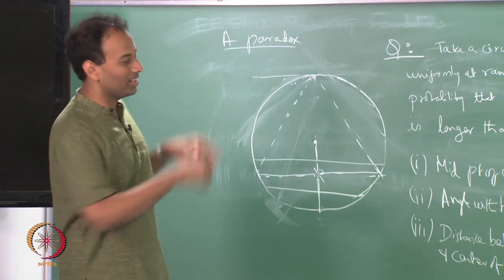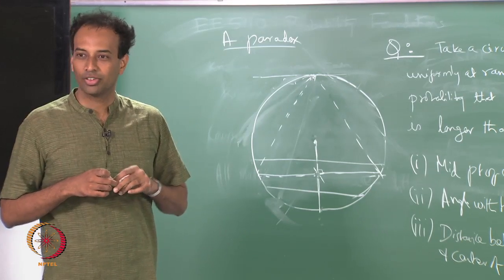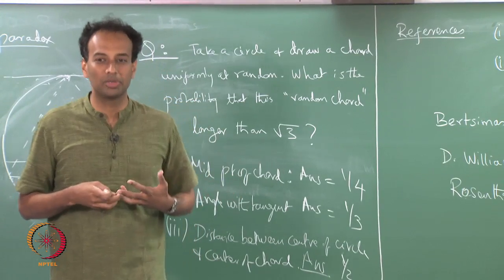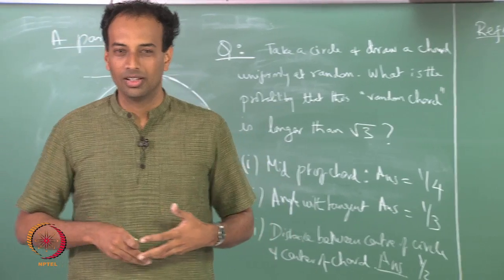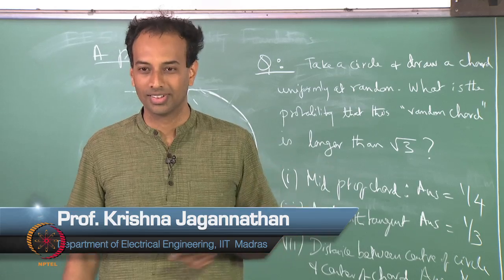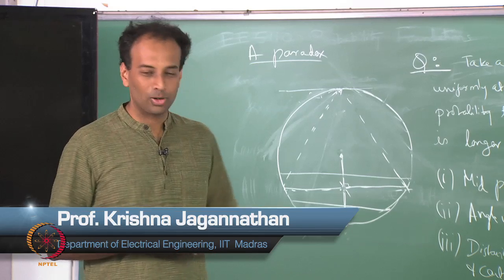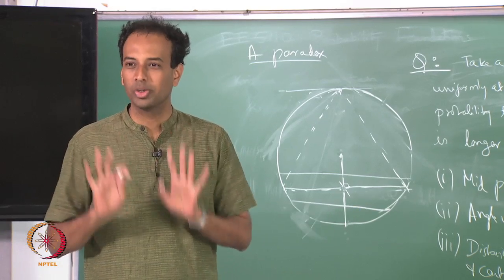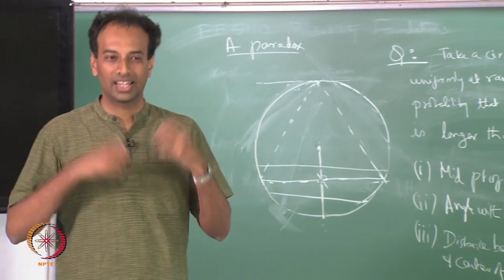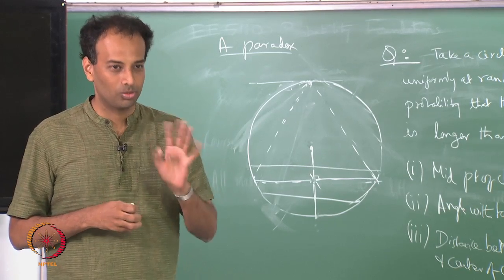I hope this opens your eyes to the possibility that you have to be a bit more careful when talking about things like a random point or a random chord. You cannot be very loose about these things — you have to specify in a more precise way. If you are generally loose about these things and say 'a random chord' without mentioning the underlying probability space, you can get into all sorts of confusion and get any of these three answers.